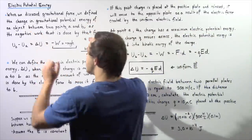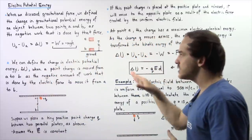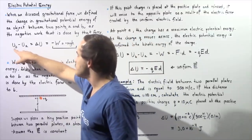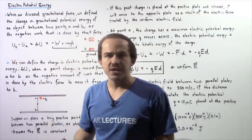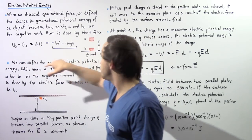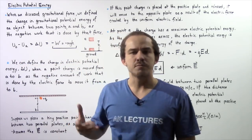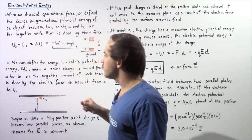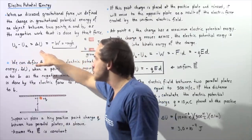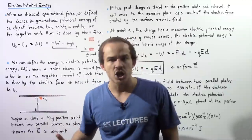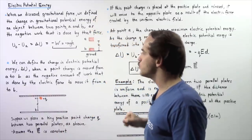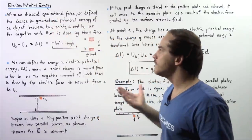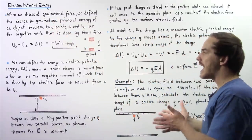We can express this using the following equation. We have UB minus UA, where UB is the gravitational potential energy of the object at position B and UA is the gravitational potential energy at point A. The difference is equal to the change in gravitational potential energy as the object moves from A to B, and this equals the negative of the work done by the force of gravity.